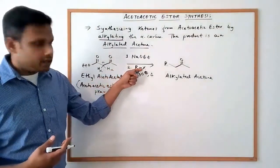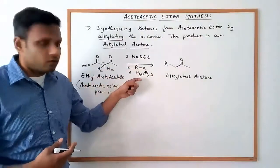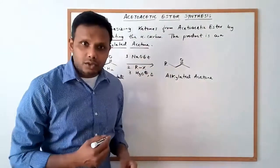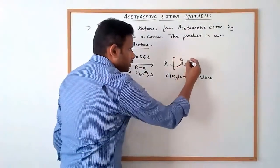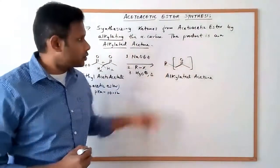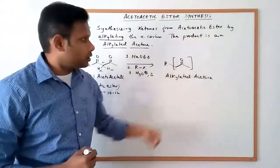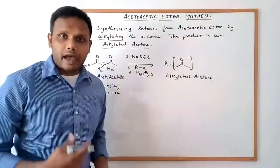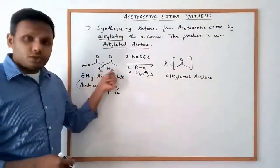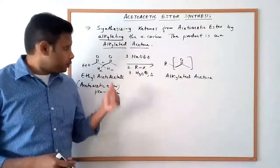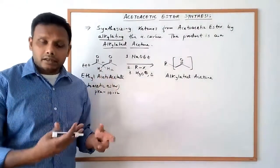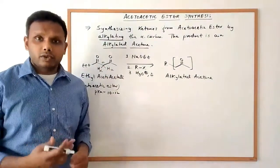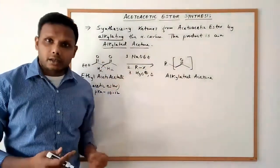When you treat it with an alkyl halide, you're able to add the alkyl group over there. A final workup gives you the product, which is an alkylated acetone — an acetone with an alkyl group added to it. There are two alpha hydrogens here, which means in principle you can deprotonate them sequentially and add two alkyl groups at that alpha carbon.